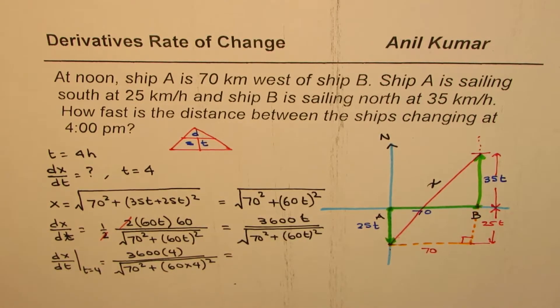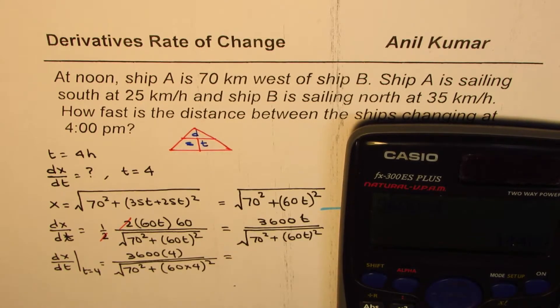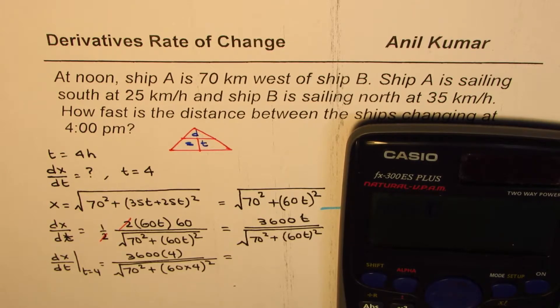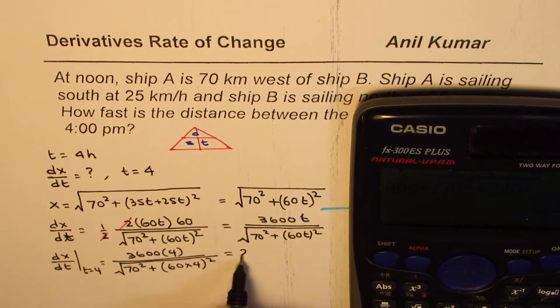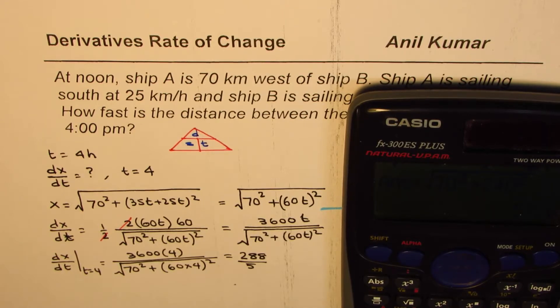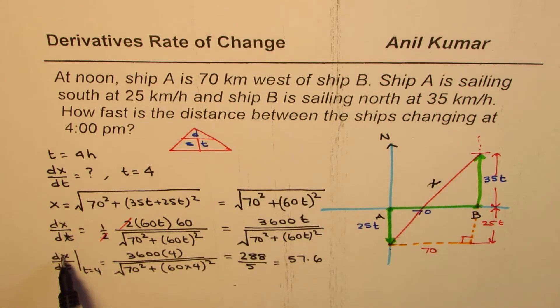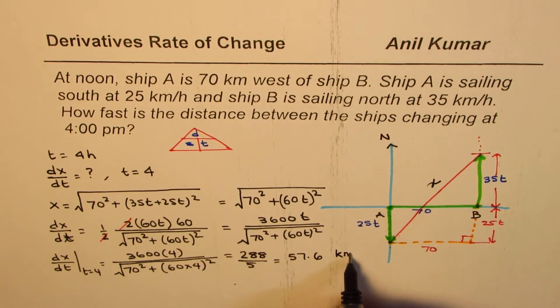Let us use the calculator to calculate this value. That is 3600 times 4, divided by square root of 70 square plus 60 times 4 is 240, so we will write 240 whole square. That should give us the answer. That equals to 288 over 5. So that is the exact answer, which in decimals could be written as 57.6. The units will be, since the distances are in kilometers and dt change in time is in hour, it will be kilometers per hour.